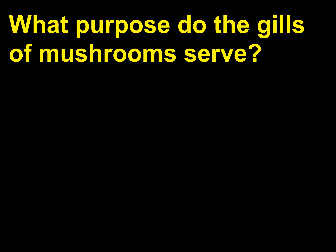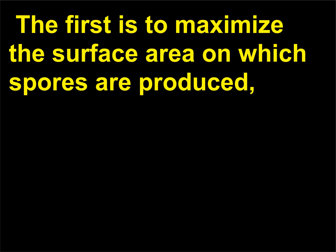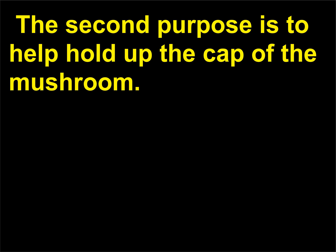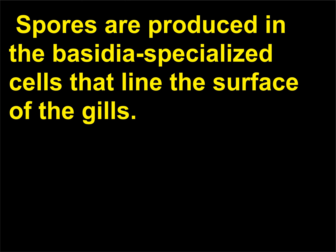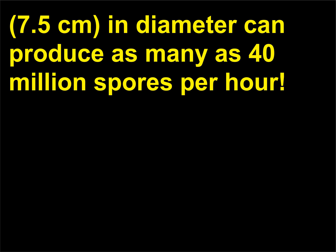What purpose do the gills of mushrooms serve? Gills, which can be present on the undersurface of a mushroom's cap, serve two main purposes. The first is to maximize the surface area on which spores are produced, allowing a very large number of spores to be produced. The second purpose is to help hold up the cap of the mushroom. Spores are produced in the basidia, specialized cells that line the surface of the gills. It has been estimated that a mushroom with a cap 3 inches (7.5 centimeters) in diameter can produce as many as 40 million spores per hour.